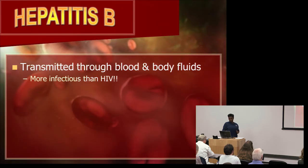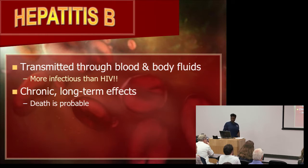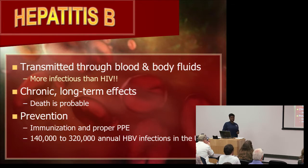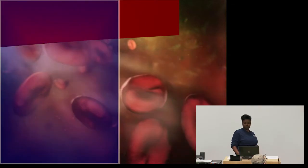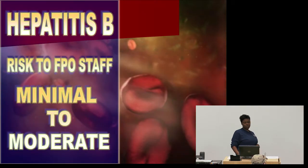Hepatitis B is transmitted through blood and bodily fluids and is more infectious than HIV. There are chronic long-term effects, and death is probable. Prevention includes immunization and proper PPE. There are 140,000 to 320,000 annual hepatitis B virus infections in the USA. The risk to FPO is minimal to moderate.